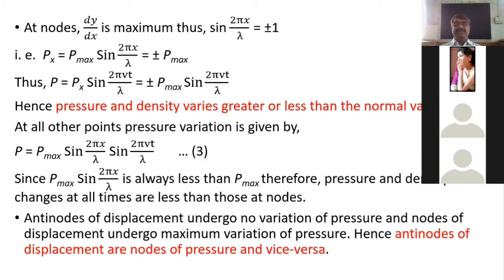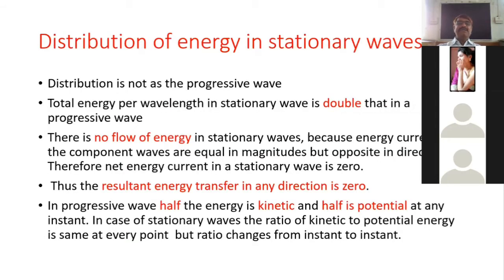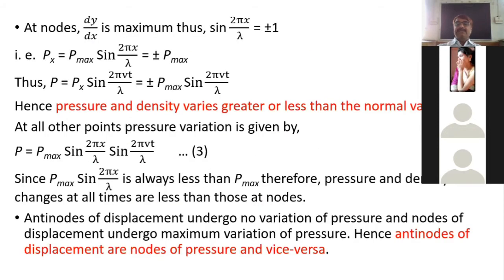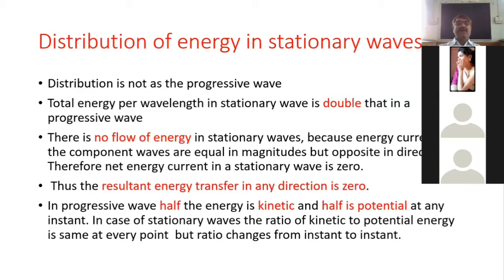At nodes the changes are maximum; at antinodes there are no changes; in between, changes are given by the general expression. Since antinodes are points of maximum displacement but zero pressure variation, and nodes are points of zero displacement but maximum pressure variation, we conclude: antinodes of displacement are nodes of pressure, and vice versa.